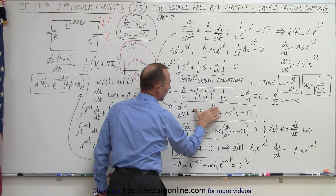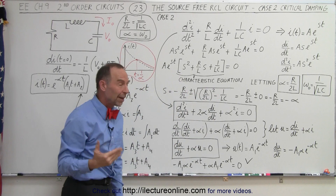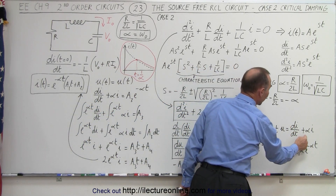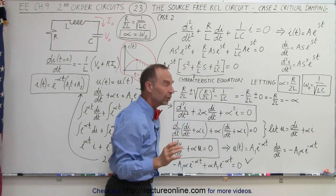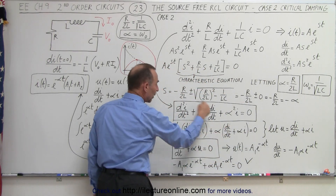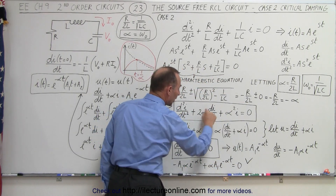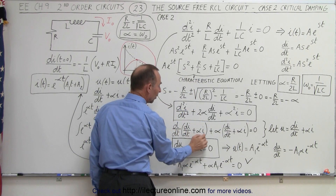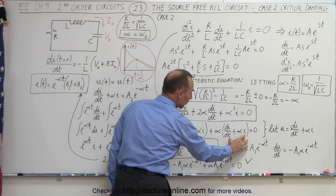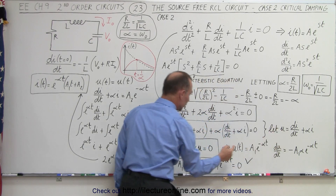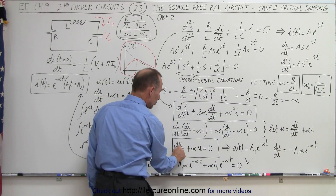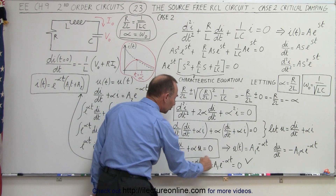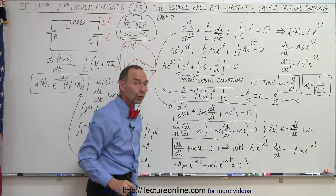Instead of this, we now have this. Now here's the mathematical trick: we're going to let u equals di/dt plus alpha times i. We can rewrite this entire equation as d/dt of this plus alpha times this. Since this equals u, we can replace both instances with u, and then we have a very simple first-order differential equation.